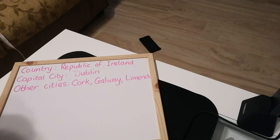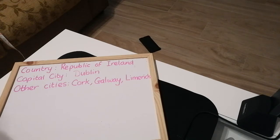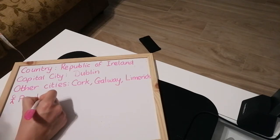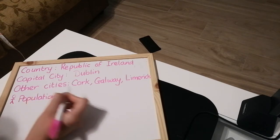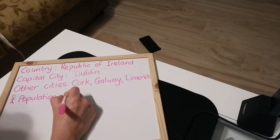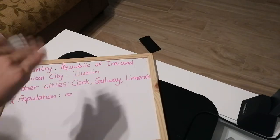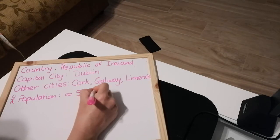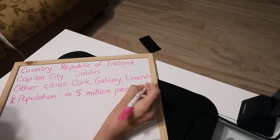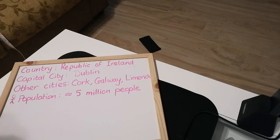What else could I include? Maybe the population. The population is the number of people in Ireland, and it's around — approximately equal to — five million people. I think one and a half million live in Dublin. The population of Spain, for example, is much bigger — I'm not sure exactly, but it'd be about 10 times bigger, maybe 50 million or around that.